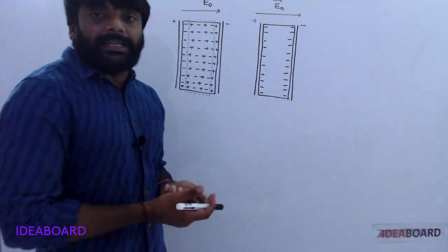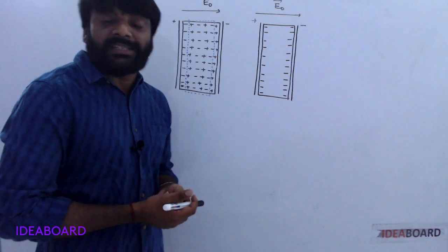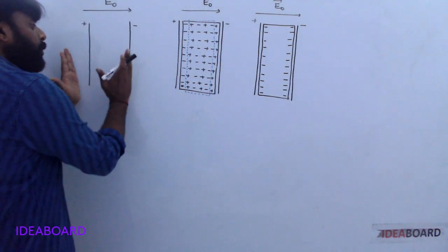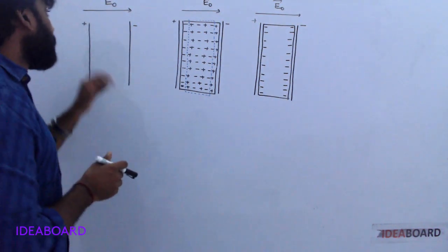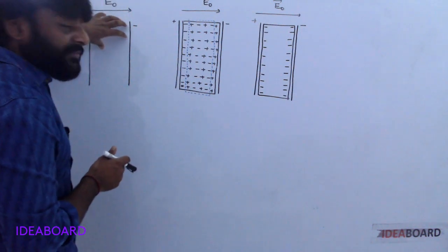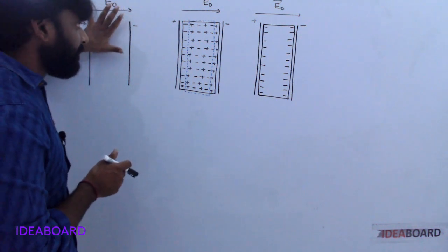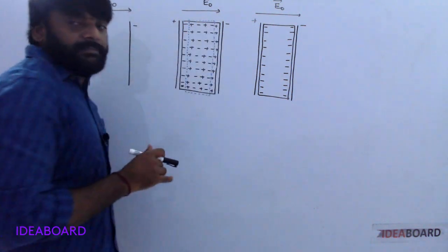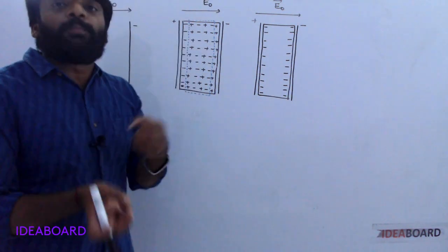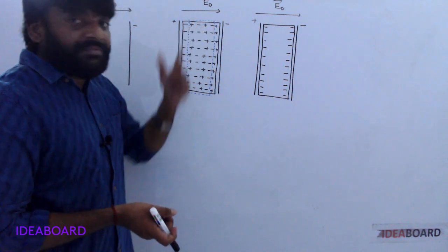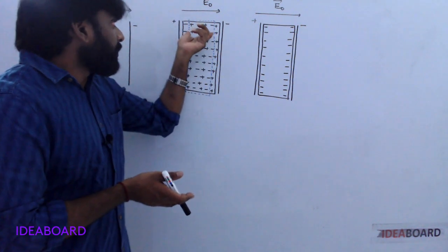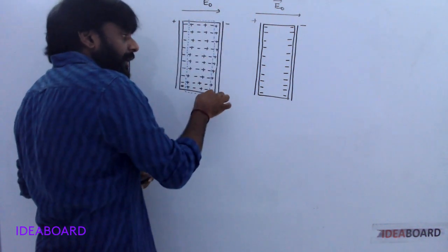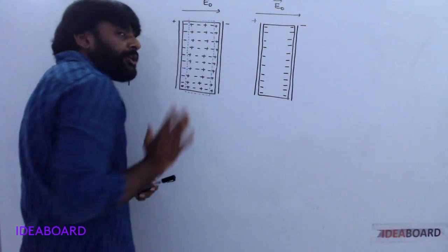If a dielectric material is placed inside of the electric field, the electric field is modified. Consider two plates — one positive, one negative — where the developed electric field is uniform. This is the external electric field. When a dielectric is placed inside these plates, charge is induced due to polarization. The molecules inside are polarized, so charge is induced on the surfaces. Inside the material, induced charges are cancelled due to positive and negative cancellation.